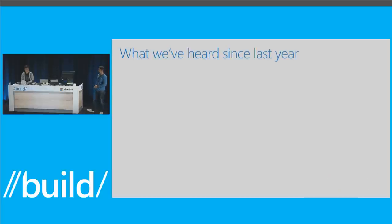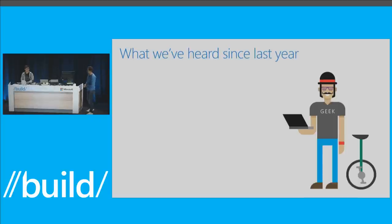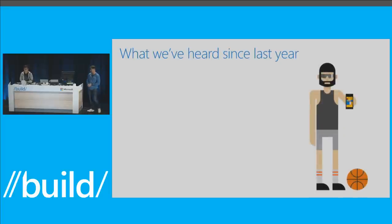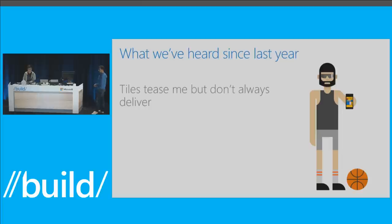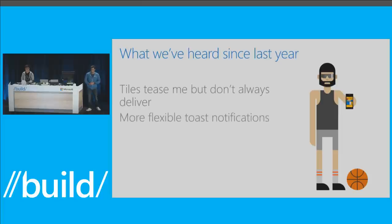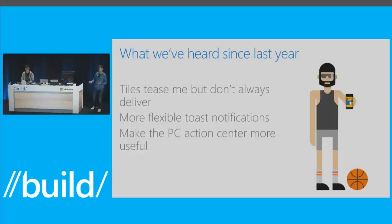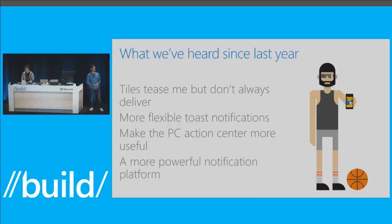Some things we heard from last year: tiles tease me but don't always deliver. We heard a lot of people ask for more flexible toast notifications — tiles could do quite a bit, toast not so much. We heard make the PC Action Center more useful. And overall, a more powerful and universal notification platform. Let's make it truly universal and give developers room to innovate on things we didn't even think of.